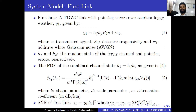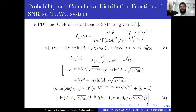It is very difficult to derive a closed-form expression. The PDF and CDF for the average SNR are derived. The CDF has an exponential function, logarithmic function, and incomplete gamma function with a logarithmic argument.